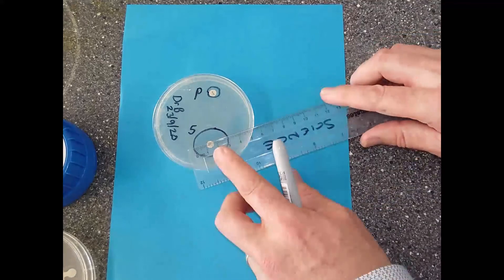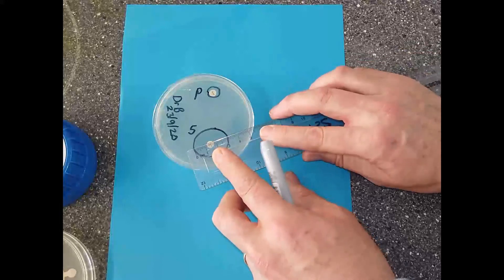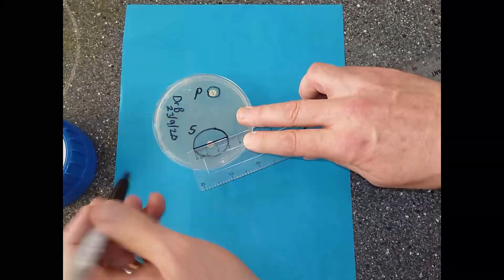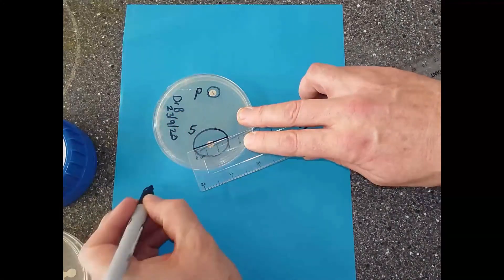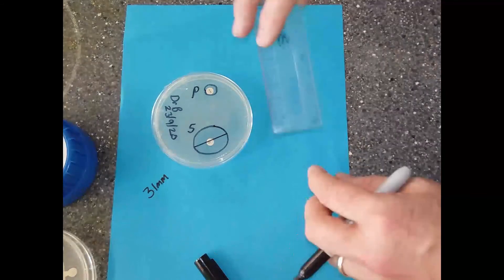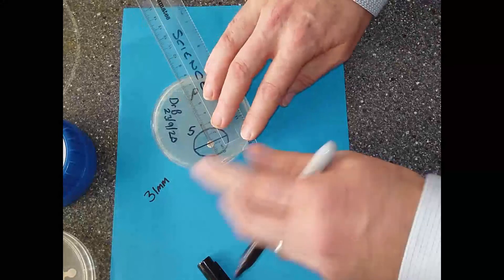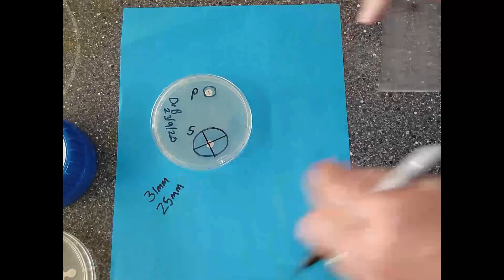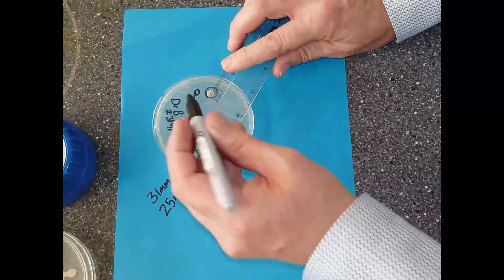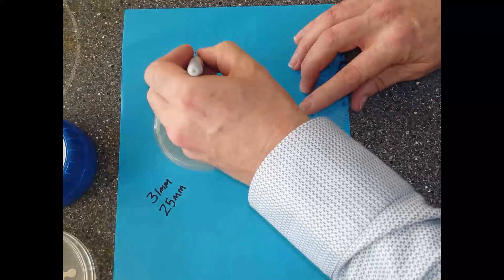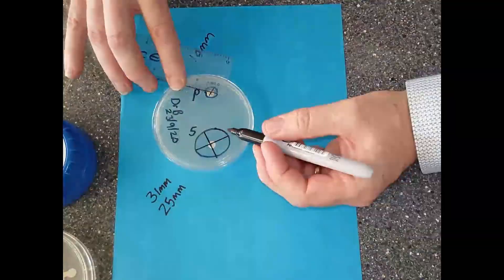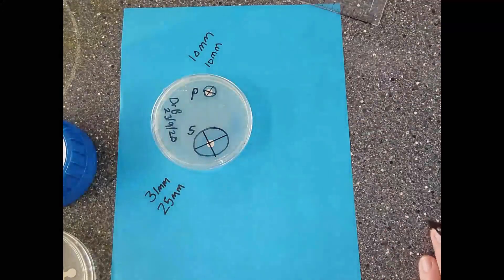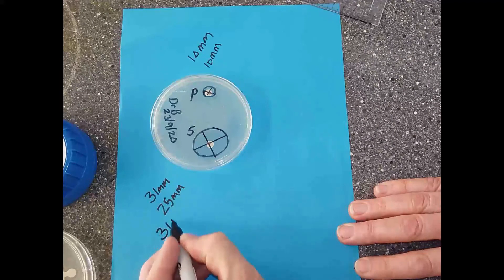We take a ruler and measure in millimeters the size or diameter of the circle. I'm going to measure streptomycin from there to there - that's 31 millimeters. Because it's not perfectly circular, I'm going to go from another direction across - that is 25 millimeters. I'll do the same for penicillin. Across there, that is 10 millimeters, and across the other way, that is 10 millimeters. We can now find the mean.